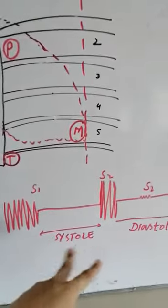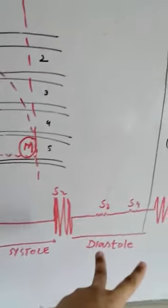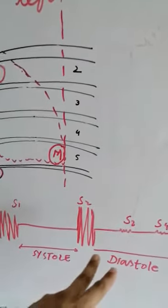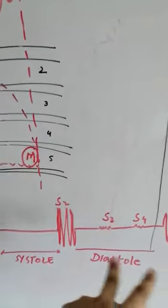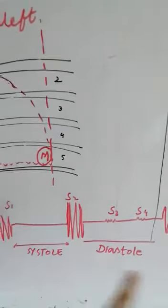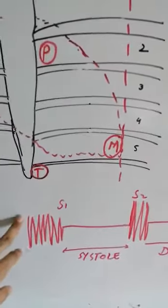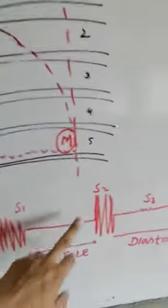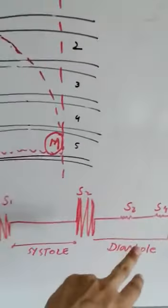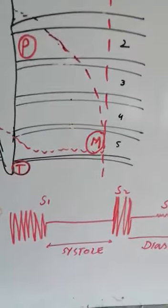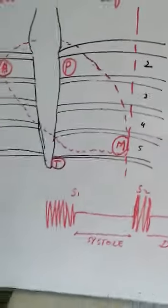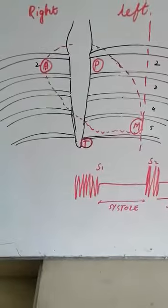The interval between S1 and S2 is known as systole, and the interval between S2 and the next S1 is diastole. This whole duration is one cardiac cycle. The first heart sound is not very loud; the second heart sound is louder. The third and fourth heart sounds have very low pitch and are not easily auscultated. The duration of the first heart sound is longer compared to the second heart sound.